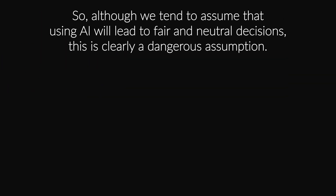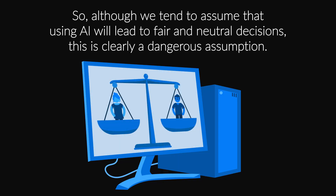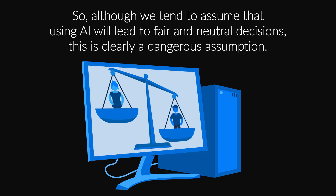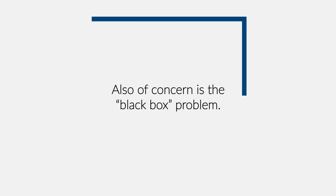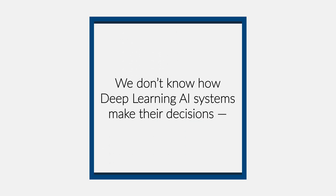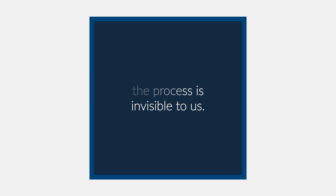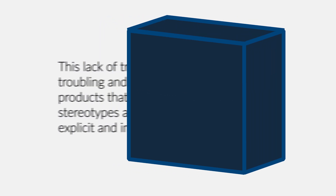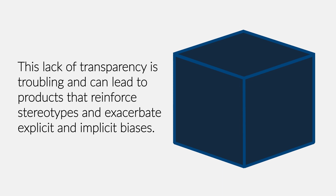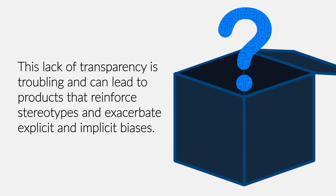Although we tend to assume that using AI will lead to fair and neutral decisions, this is clearly a dangerous assumption. Also of concern is the black box problem. We don't know how deep learning AI systems make their decisions. The process is invisible to us. This lack of transparency is troubling and can lead to products that reinforce stereotypes and exacerbate explicit and implicit biases.